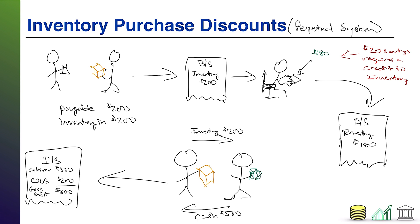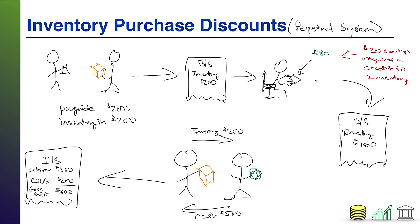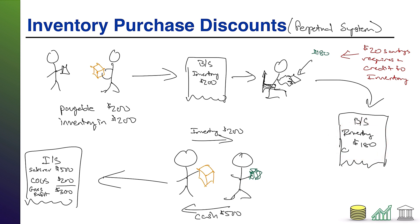The 20 savings requires a credit to the inventory account — that's the piece that confuses students. A credit to an asset is a reduction, and students say 'but you still have all the inventory, why are you reducing it?' You're not reducing the quantity of inventory — you're simply reducing the value recorded on your balance sheet down to the price you actually paid.